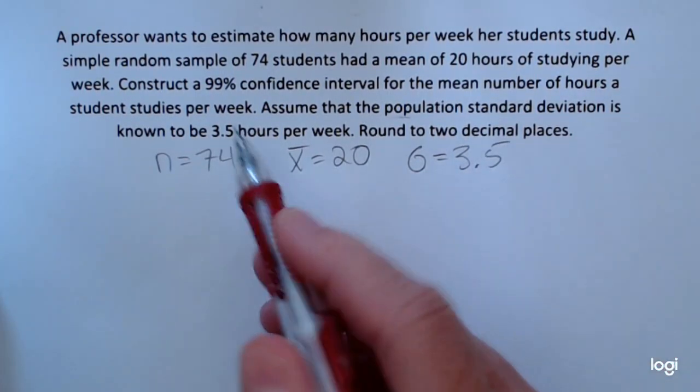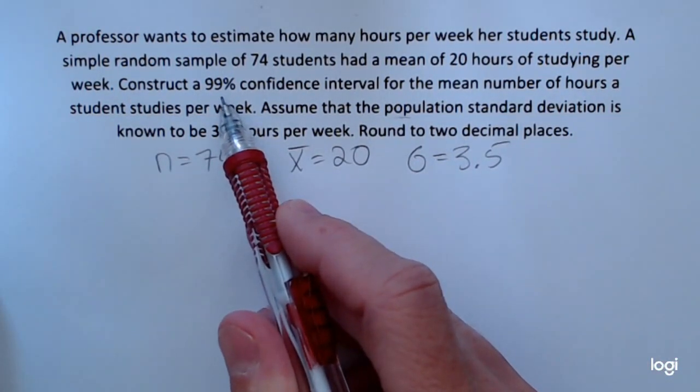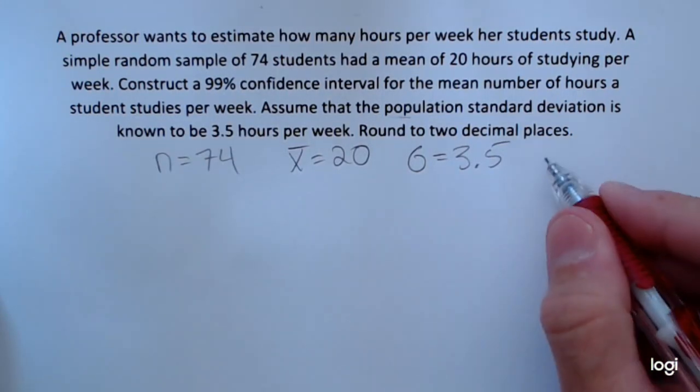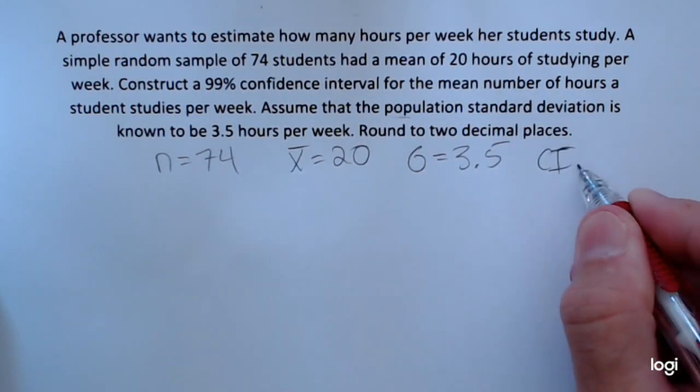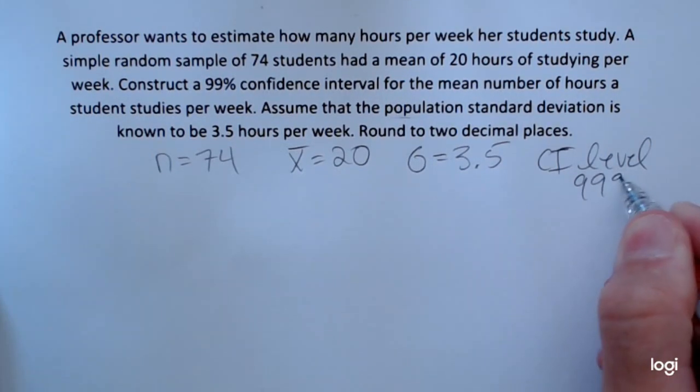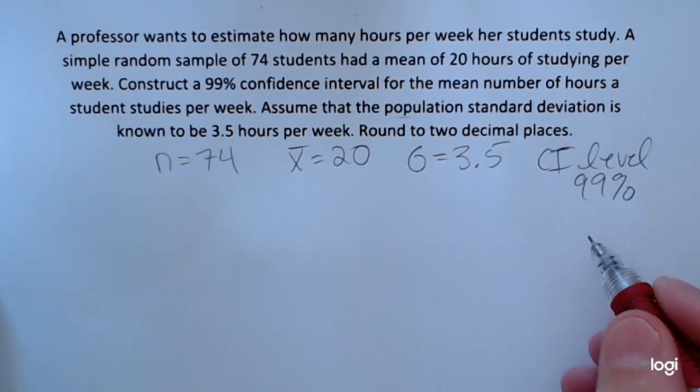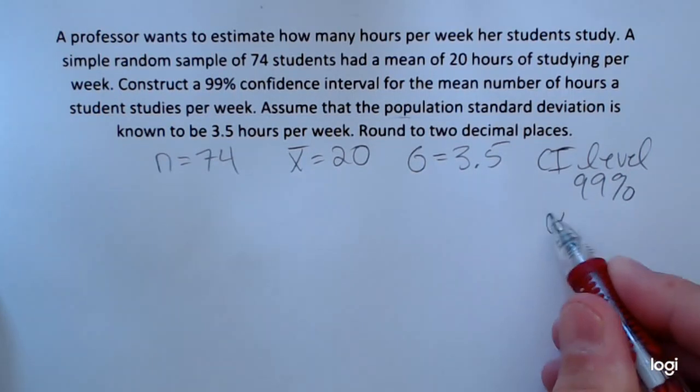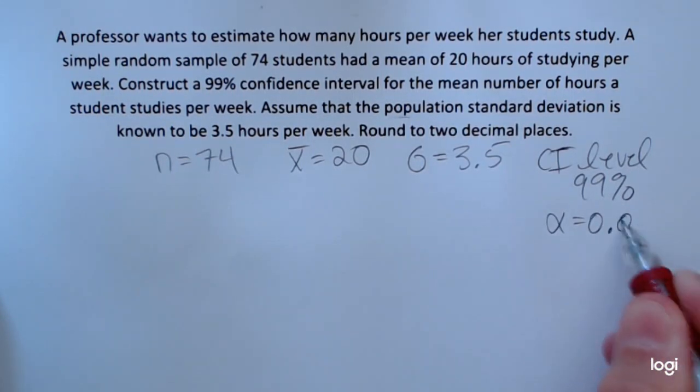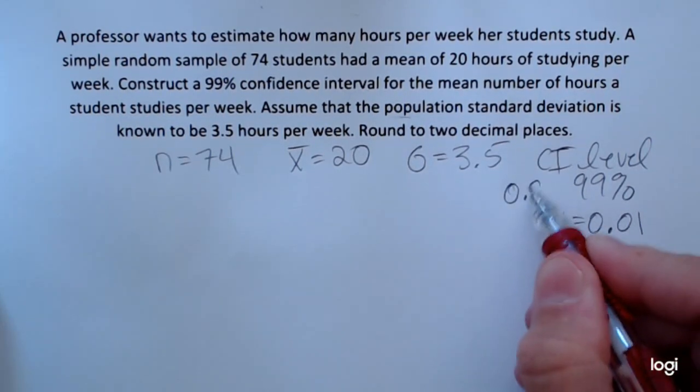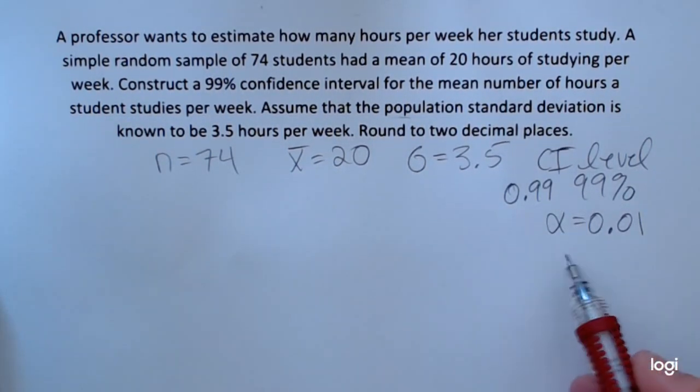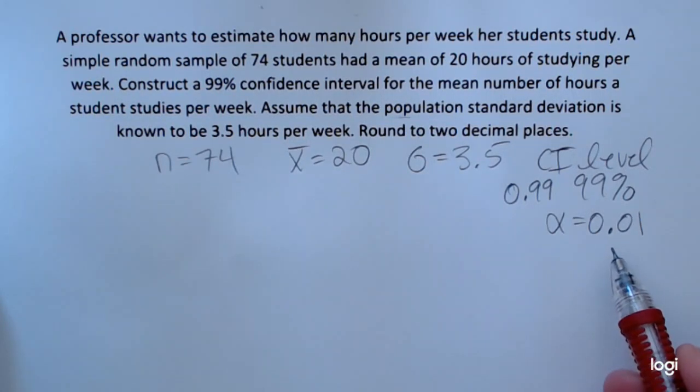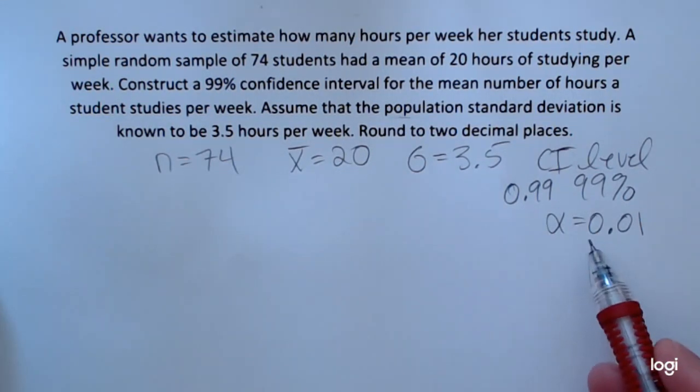They are asking for a 99% level of confidence. So my CI level is 99%. So the corresponding alpha level, which I will have to divide in half, is going to be 0.01. So if the confidence level is 0.99, then alpha is 0.01. Now for a confidence interval, you have to divide this in half to get the tail area.